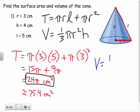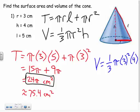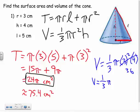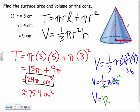For volume, same process — just plug in. With radius 3 and height 4: V = (1/3)π(3²)(4) = (1/3)π(9)(4) = (1/3)(36π). One-third of 36 is 12, so volume = 12π cm³. We leave it as 12π. Remember, volume uses cubic units.